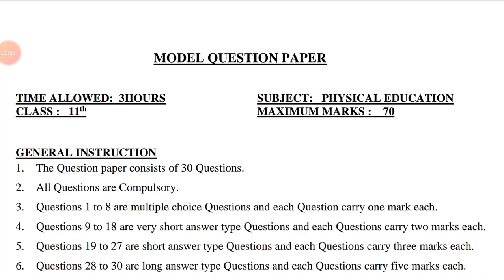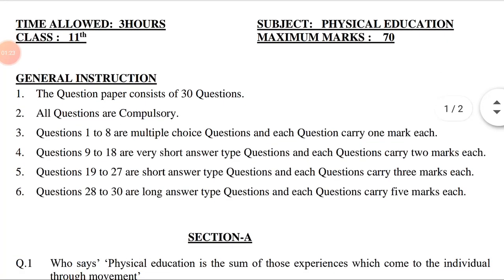General instructions: The question paper consists of 30 questions. All questions are compulsory. Questions 1 to 8 are multiple choice questions and each question carries one mark. Questions 9 to 18 are very short answer type questions carrying two marks each. Questions 19 to 27 are short answer type questions carrying three marks each. Questions 28 to 30 are long answer type questions carrying five marks each.